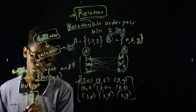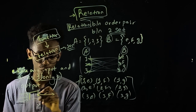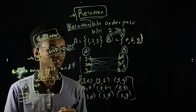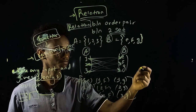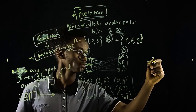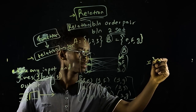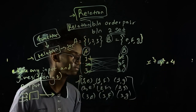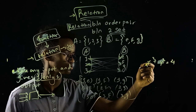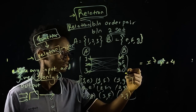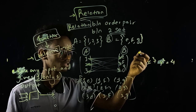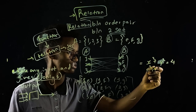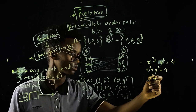For example, consider the equation x² + y² = 4. If we plug in x = 0 into x² + y² = 4, we get 0 + y² = 4, so y² = 4.